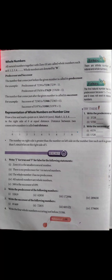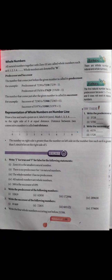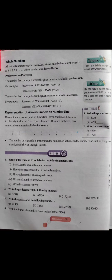Question number 3: write the successor of the following numbers. Given number ke just baad waala number likhna hai. Jaise 81,469 hai to iска successor hoga 81,470 — kyunki successor hota hai given number ke just baad waala number.